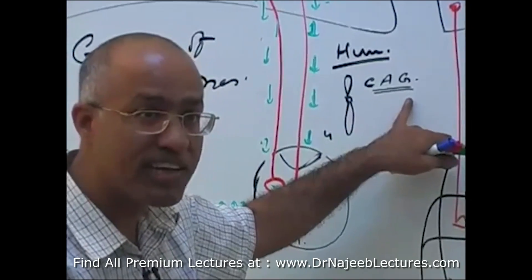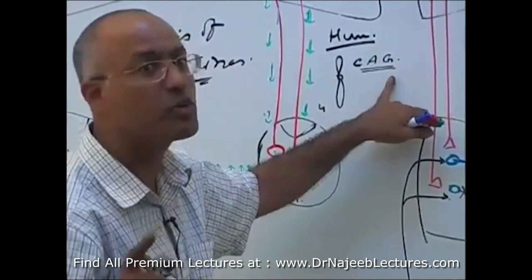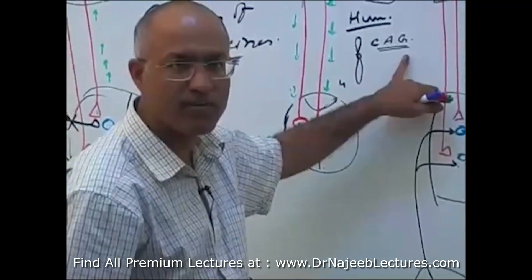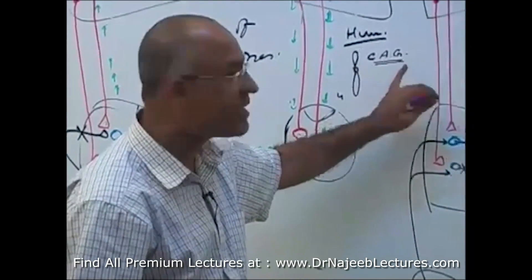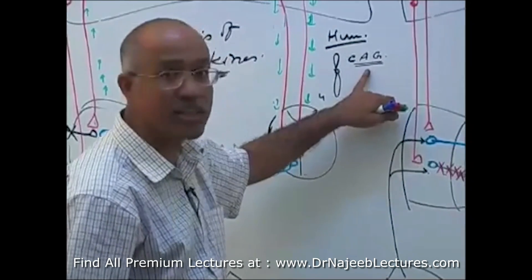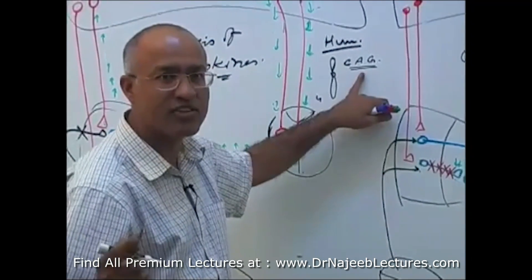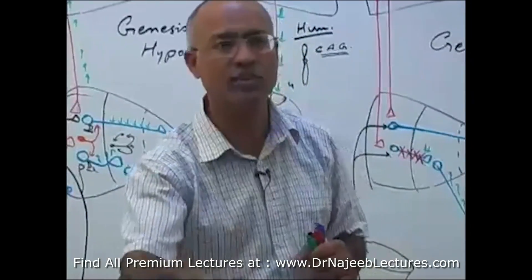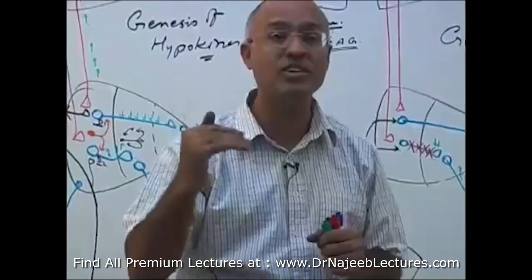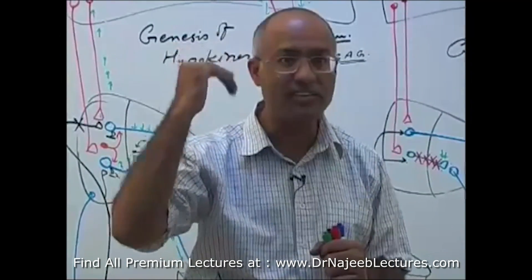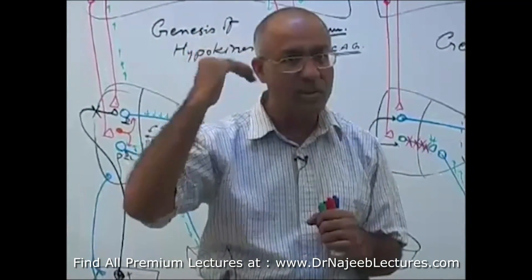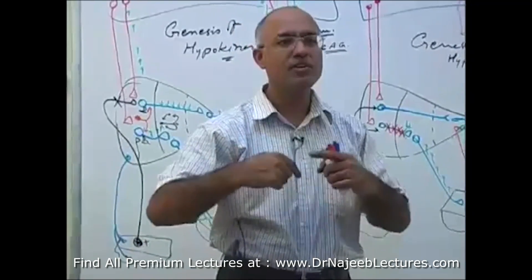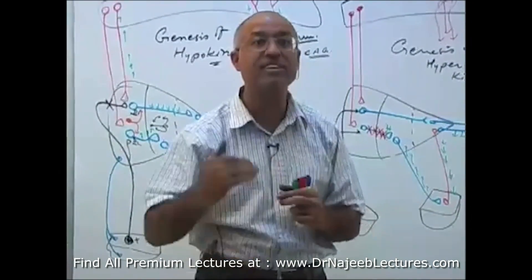So, what will be the result? Basal ganglia dysfunction. And that will result into choreiform movement. With that, these patients also develop depression and dementia. And in chorea disease, all the features of trinucleotide repeat diseases are there. For example, trinucleotide repeat diseases get progressively worse generation after generation. So in Huntington's chorea, also get worse generation after generation. Father has less severe disease, son will have more severe disease, grandson will have very severe disease. Secondly, because after every generation, trinucleotide repeat amplify, disease get worse.